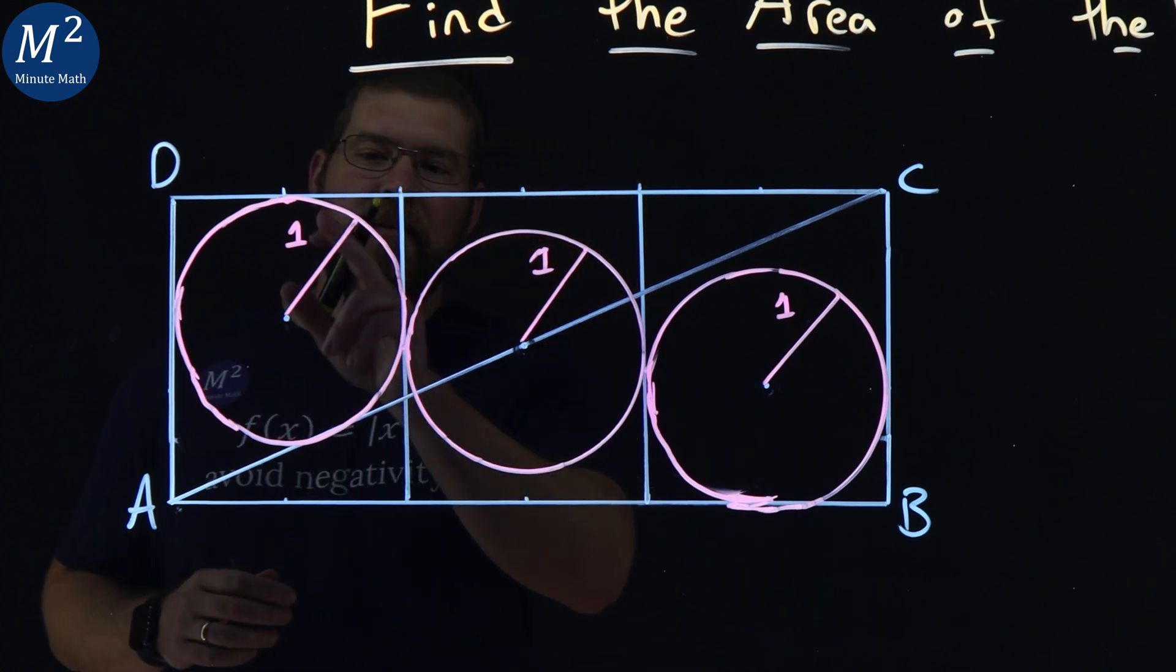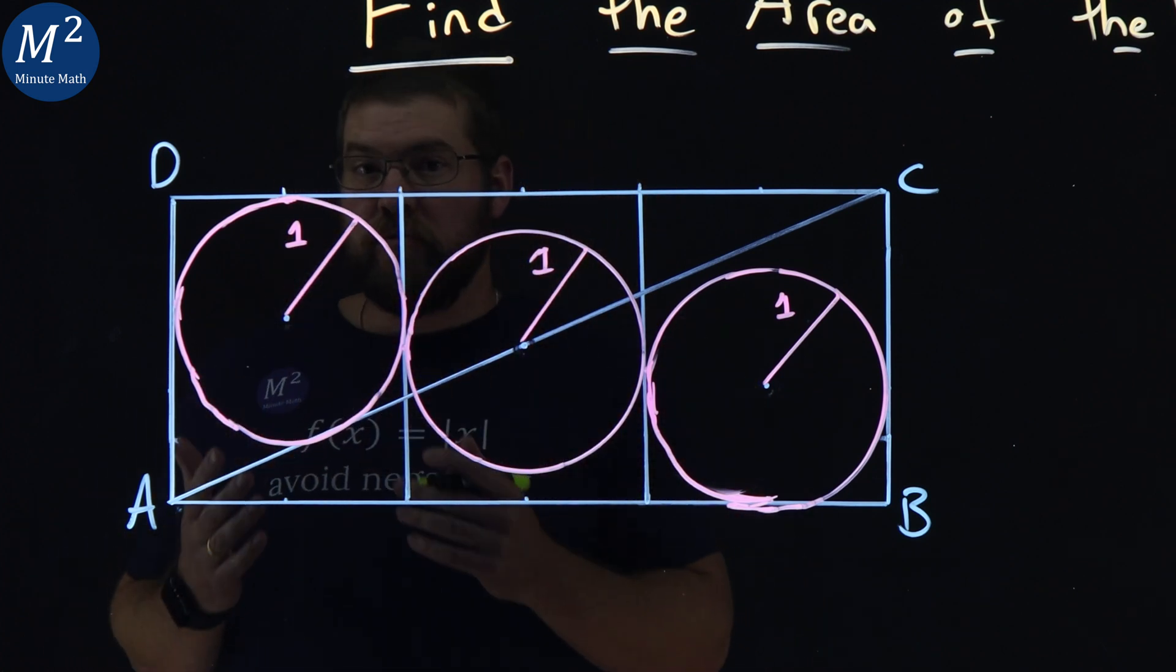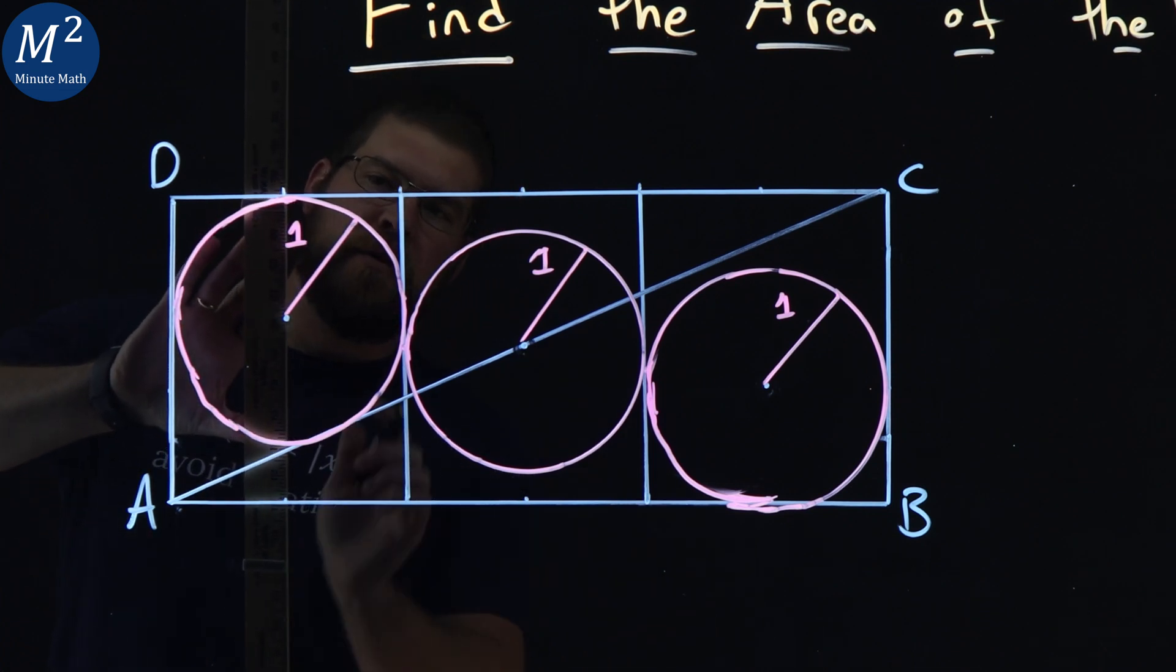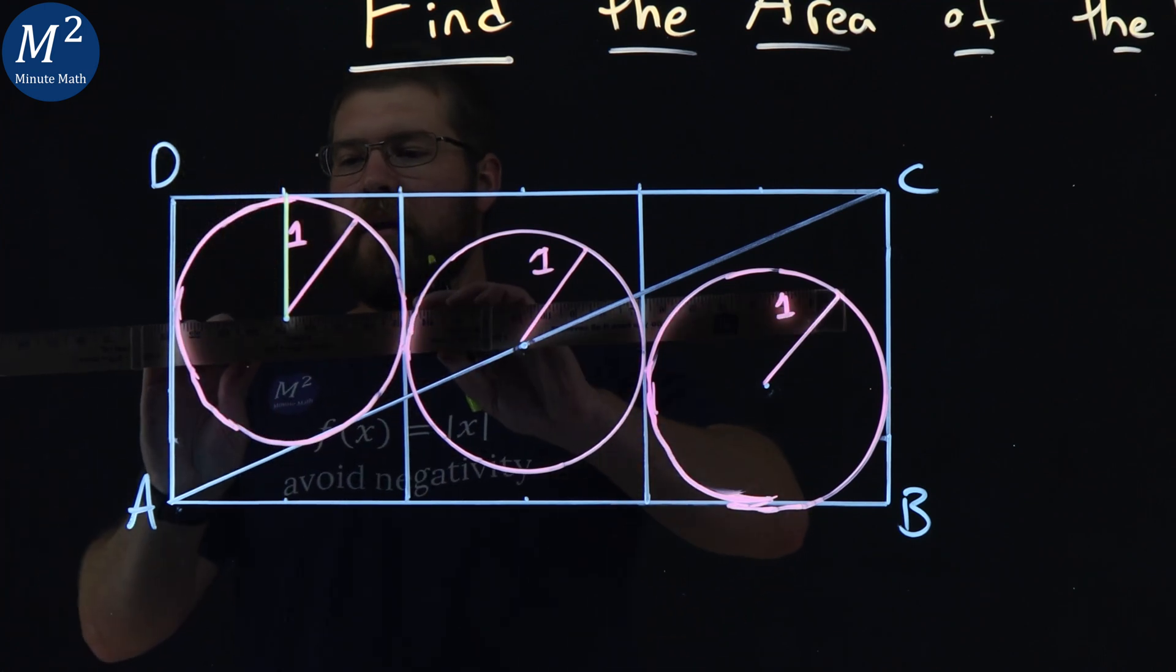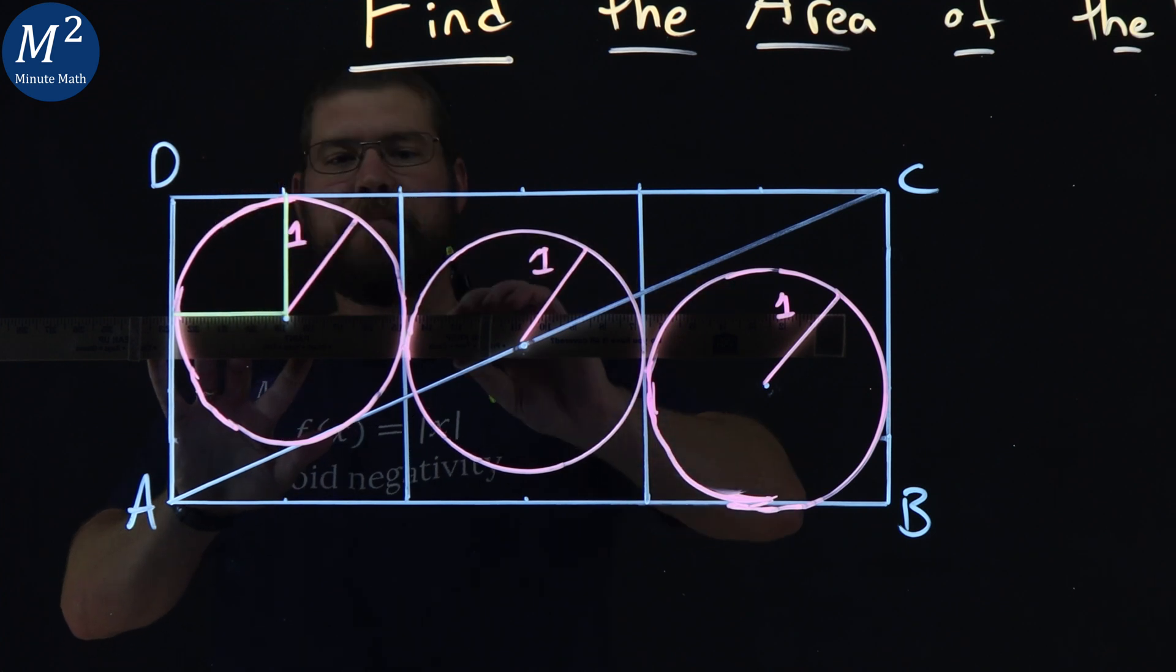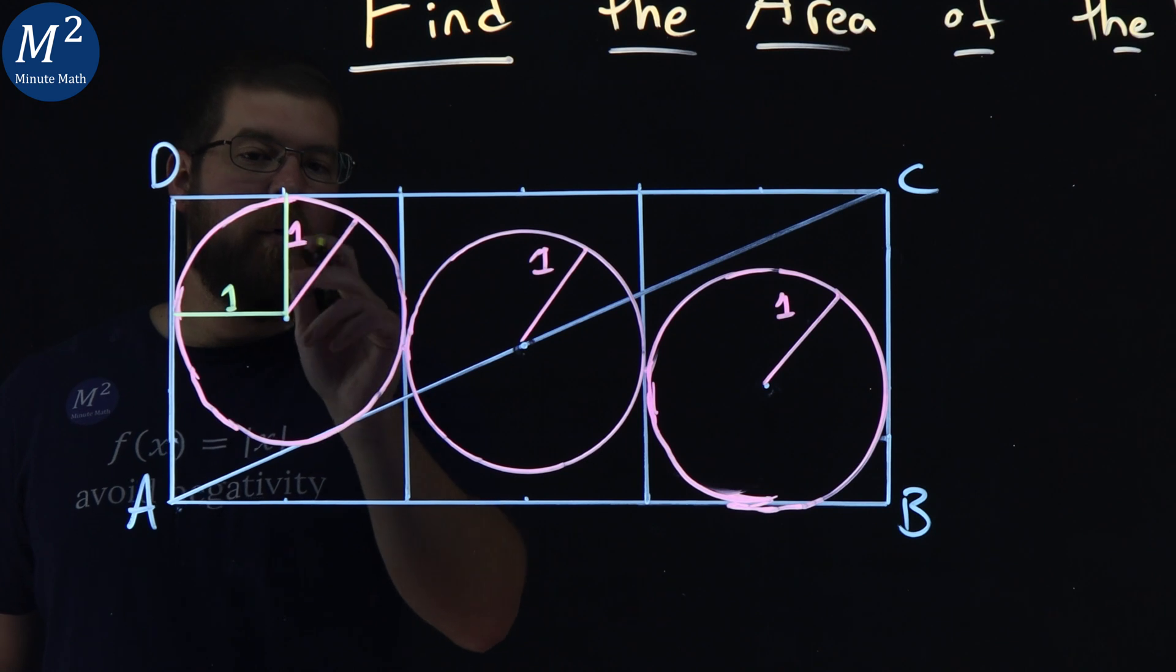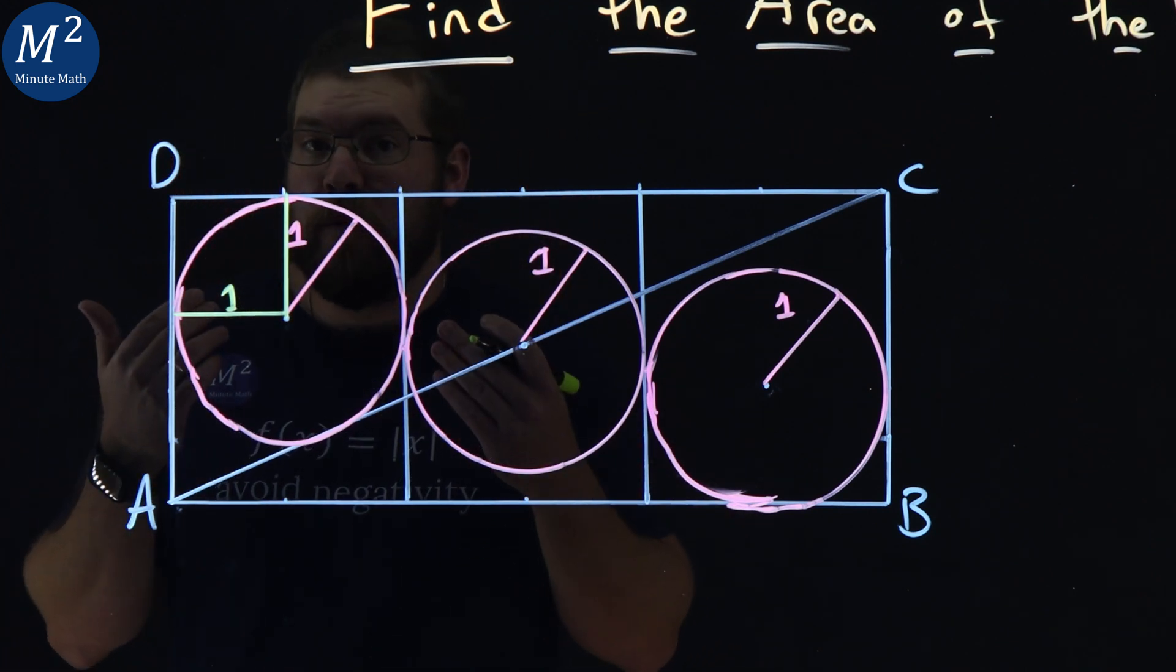First thing I want to notice here is since each one has a radius of one, I'm going to draw on this first circle a line that goes down from here and perpendicular across to that point of tangency on the wall, and with that we create a square.